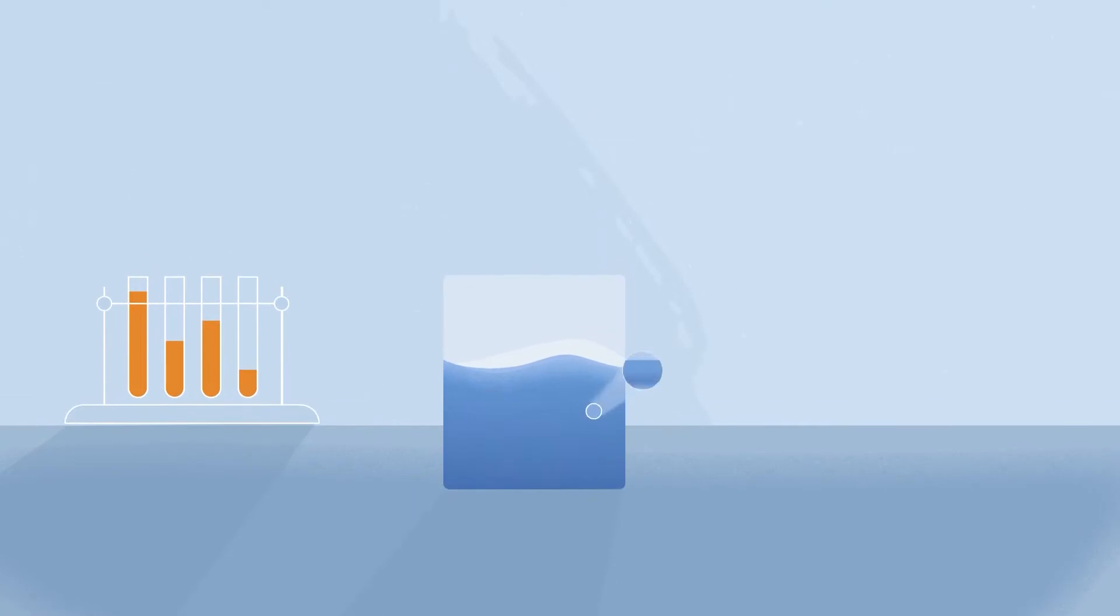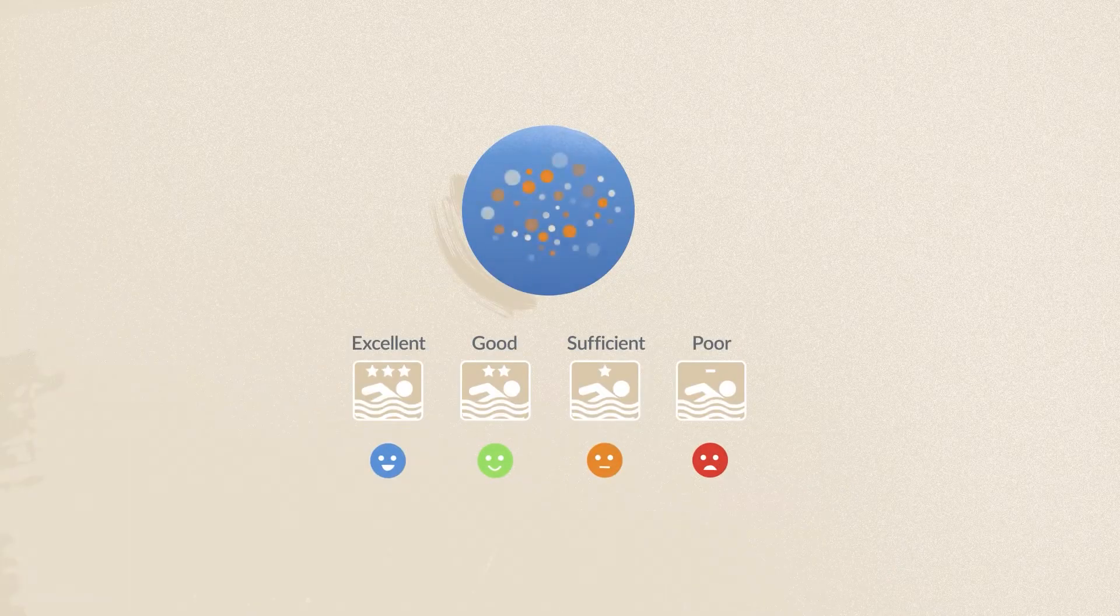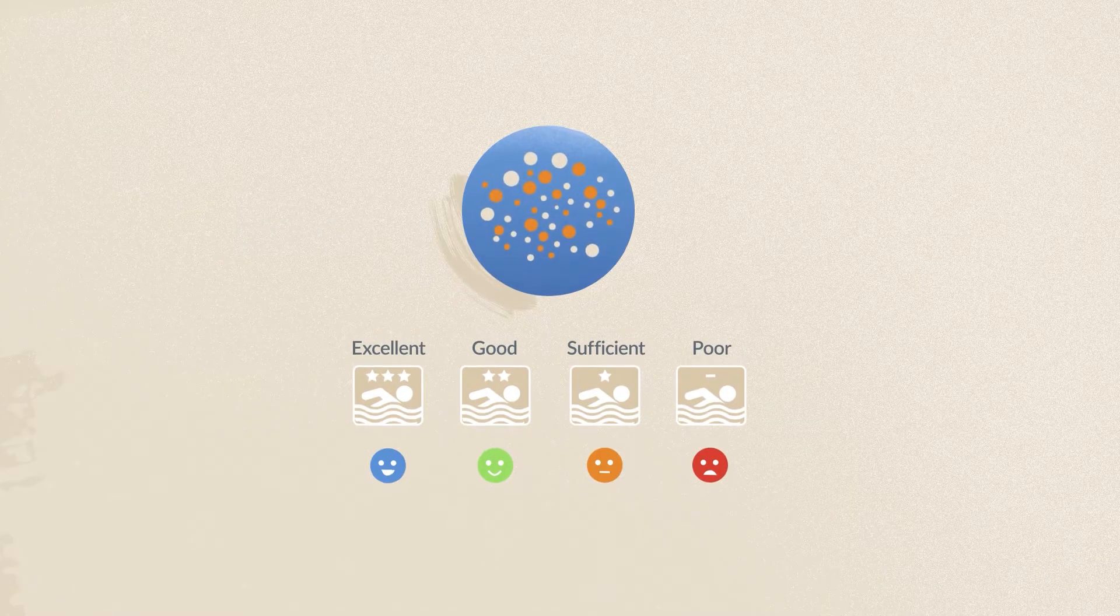Beach water is tested regularly for the presence of faecal bacteria to ensure it is safe for swimming. It is classified from excellent to poor according to the number of bacteria found in these samples.